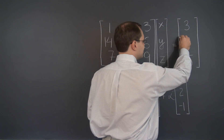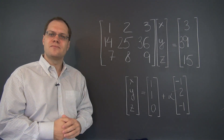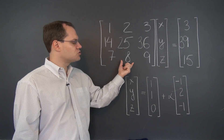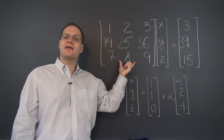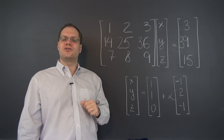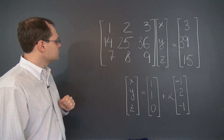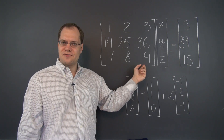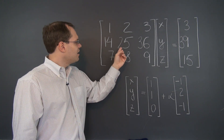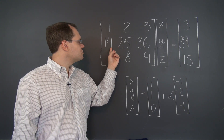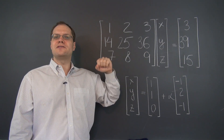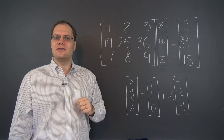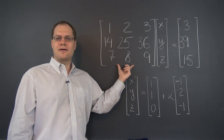Doing the same thing on the right-hand side leaves us with 39. Now let's see what happened to the relationships among the columns. Is it still true that the middle column is the average of the other two? Yes, it is — because 2 is still the average of 1 and 3, and 8 is still the average of 7 and 9; those numbers are unchanged. And 25 is of course the average of 14 and 36, because 14 plus 36 is 50, divided by 2 is 25. So this row operation preserved the relationships among the columns.